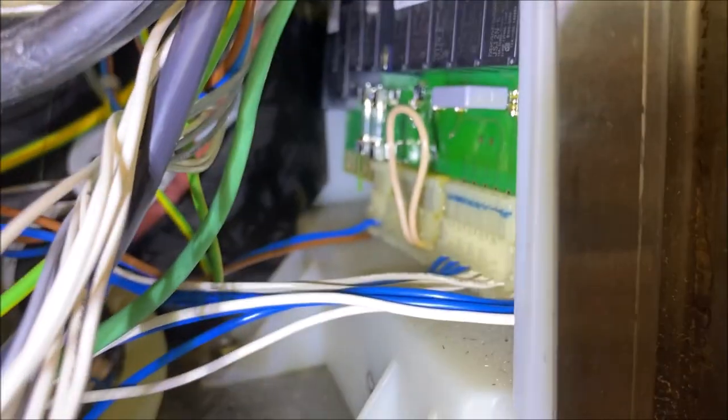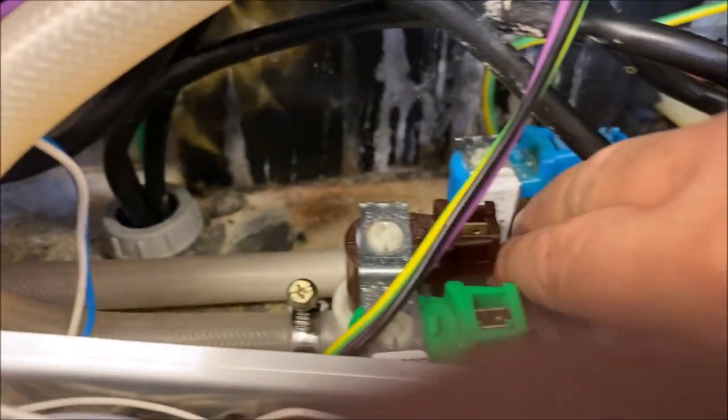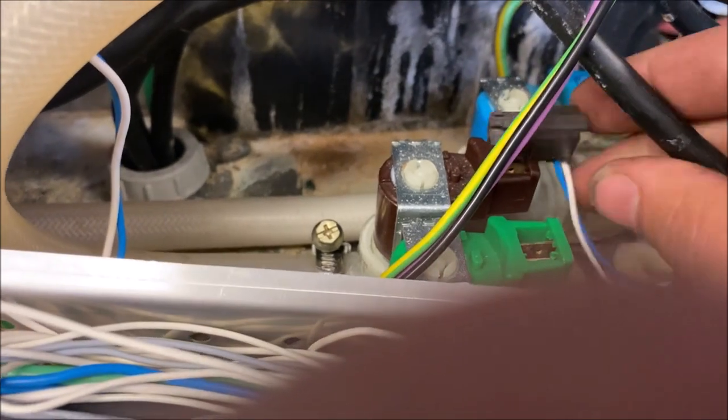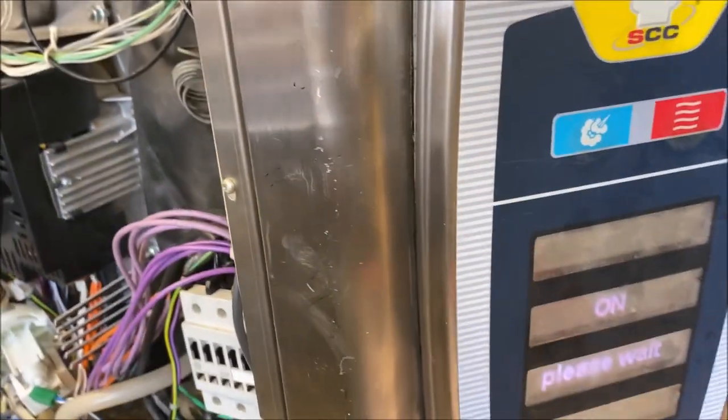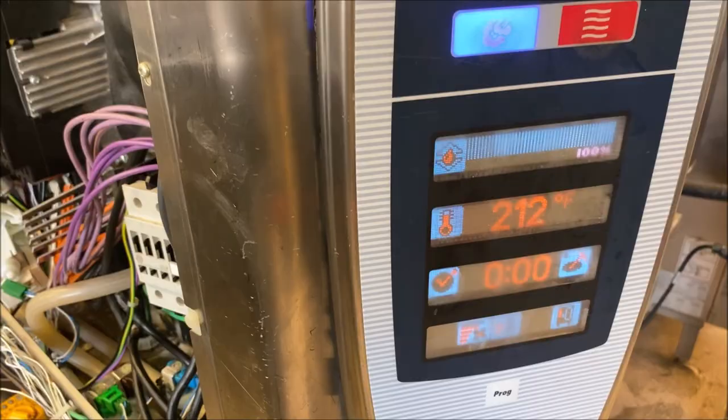The fuses did not blow, so that's good. That means the dead short is in one of these five components. Power down, of course. Let's hook back up our solenoids. If it blows, we know it's one of these three solenoids. It's usually not the solenoid. I'm leaning towards this clean jet pump.